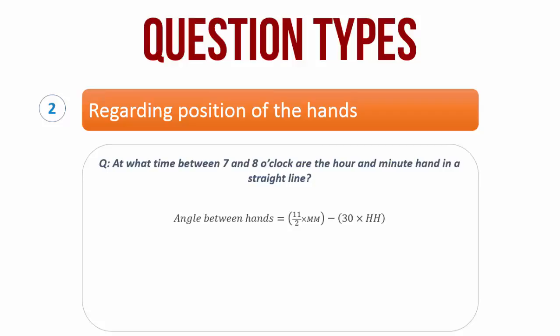The hour is equal to 7 because this is the time between 7 and 8 o'clock. So it can be anything from 7 o'clock to 7 hours and 59 minutes. But the hour here in the formula is equal to 7. The hour hand and the minute hand are in a straight line, which means the angle between the hands is 180 degrees. Now substituting everything into the formula, we have 180 equal to 11 by 2 into minutes minus 30 into 7.